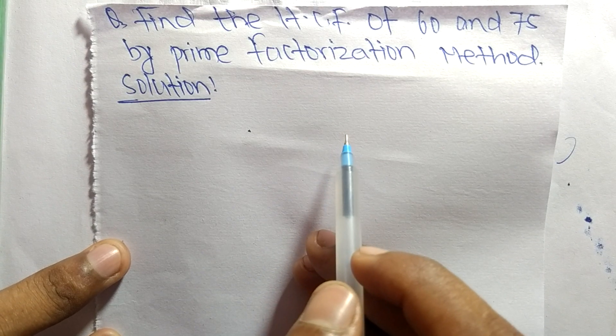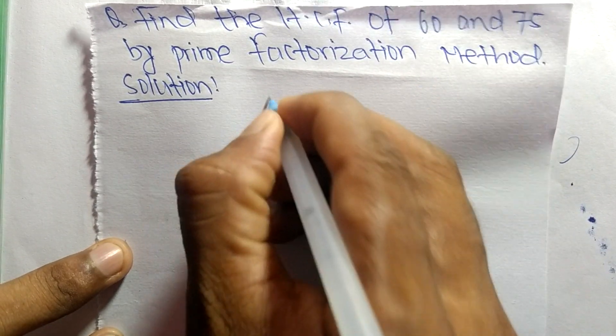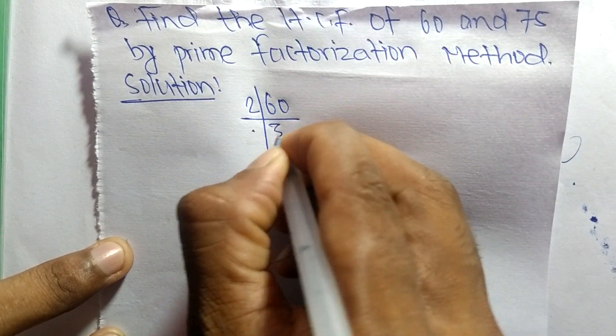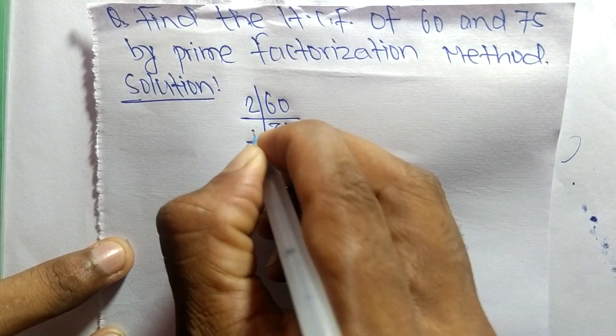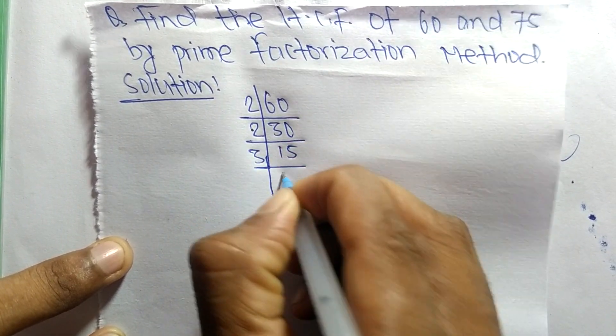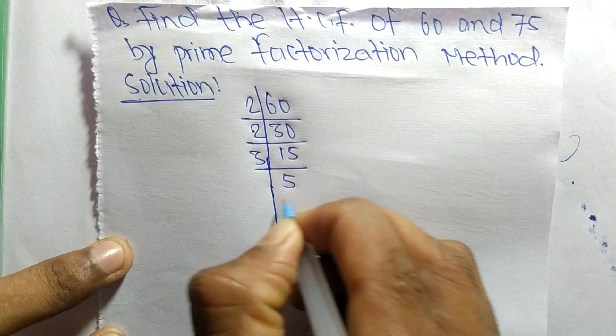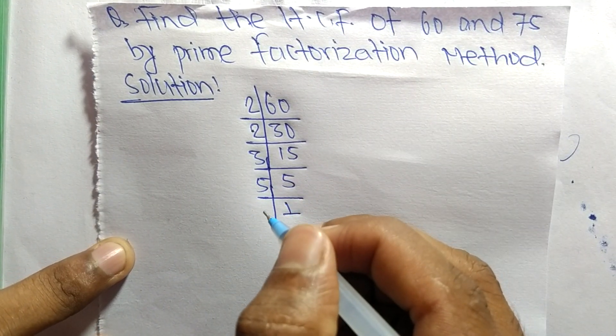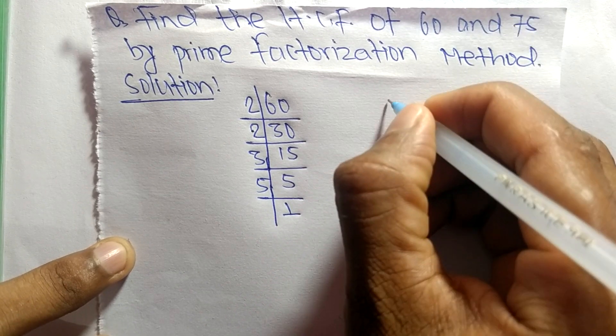First, we find the prime factors of 60. It is 2 times 30 equals 60, 2 times 15 equals 30, 3 times 5 equals 15, and 5 times 1 equals 5. These are the prime factors.